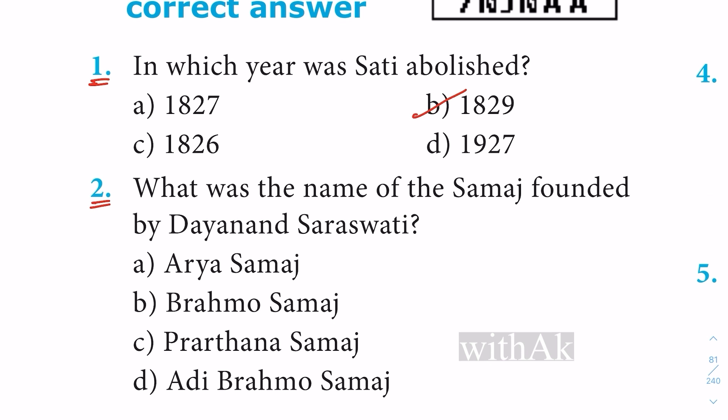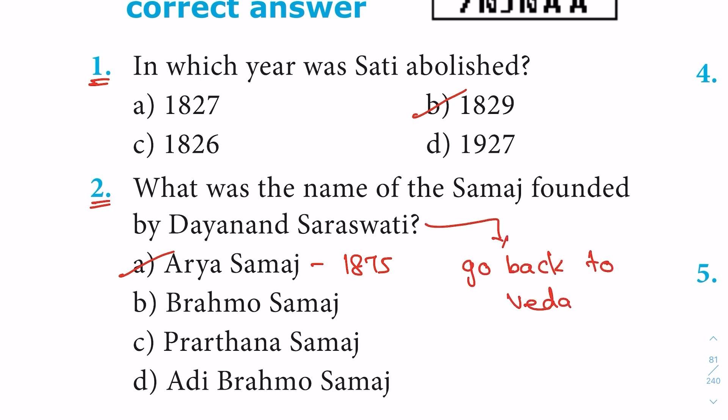Second question: What was the name of the Samaj founded by Dayananda Saraswati? Option A: Arya Samaj, founded in 1875. Dayananda Saraswati's famous quote was 'Go back to Vedas.' He is considered the spiritual father of Punjab nationalism.